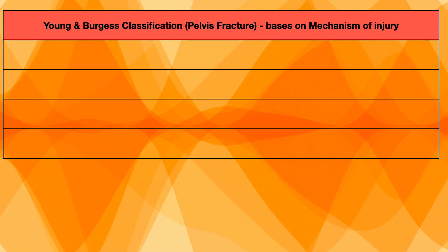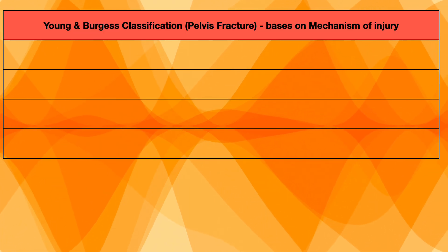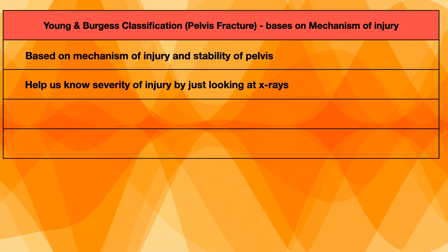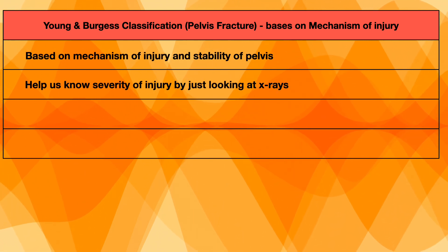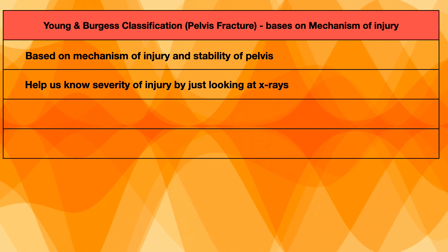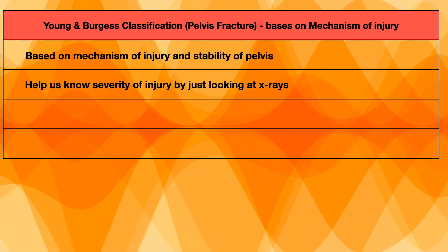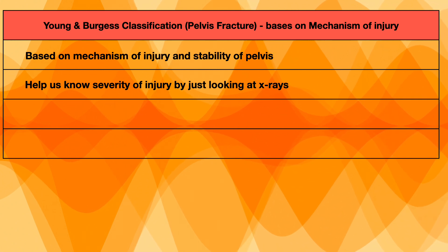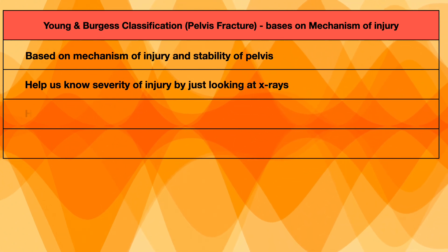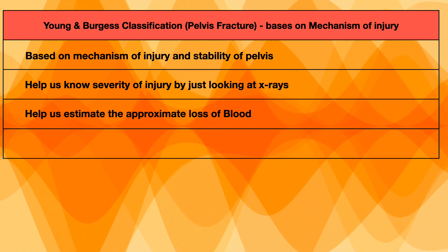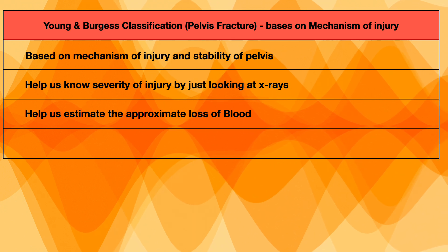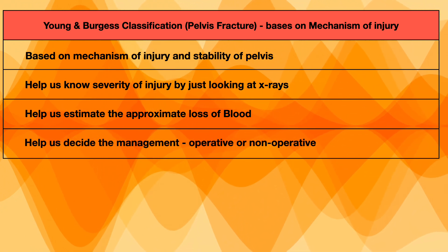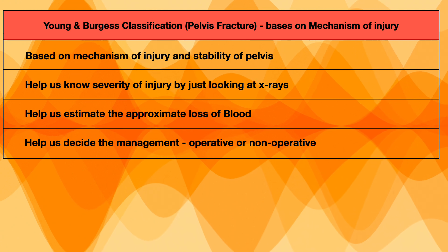Young and Burgess classification is based on the mechanism of injury and stability of the pelvis. If we have a patient in the casualty and we just look at the plain x-ray of the pelvis, then with this classification we should be able to tell the severity of the injury, estimate the approximate loss of blood, and decide the management — whether operative or non-operative.